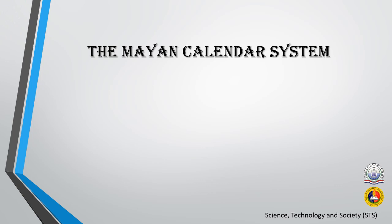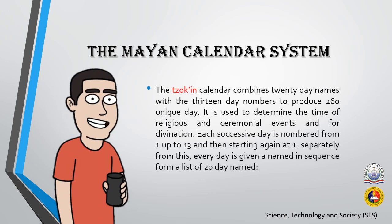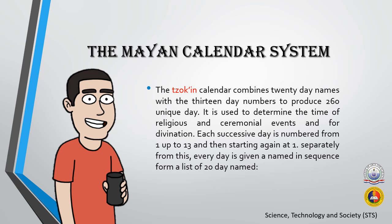The 260-day calendar combines 20-day names with 13-day numbers to produce 260 unique days. It is used to determine the time of religious and ceremonial events. Each successive day is numbered from 1 up to 13 and then starts again at 1. Separately, every day is given a name in sequence from a list of 20-day names.